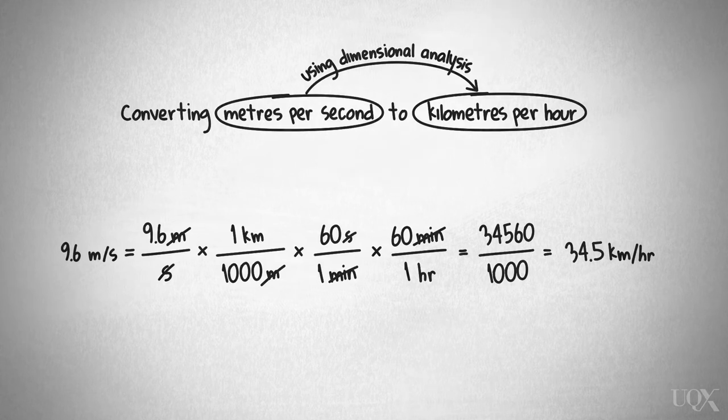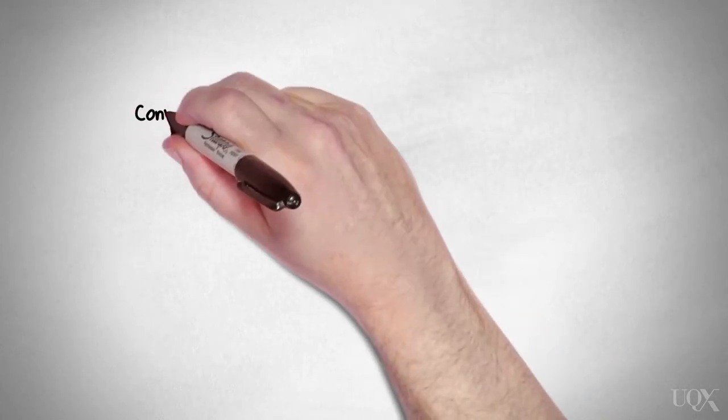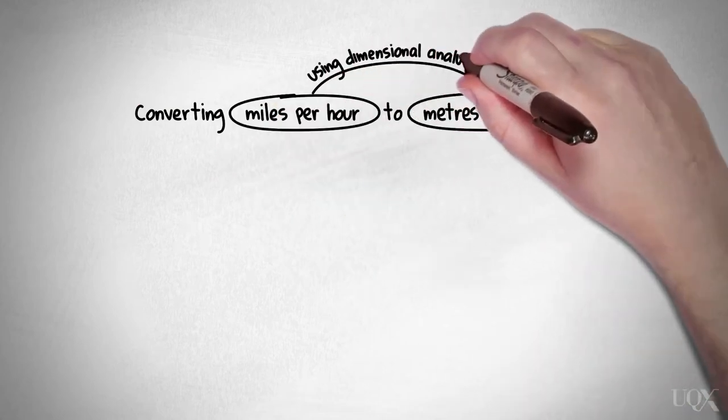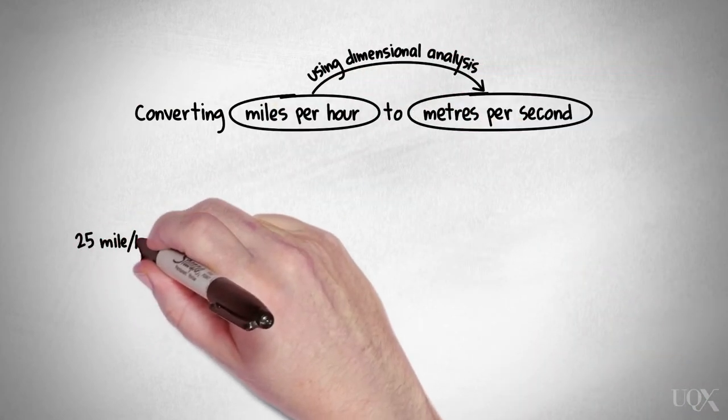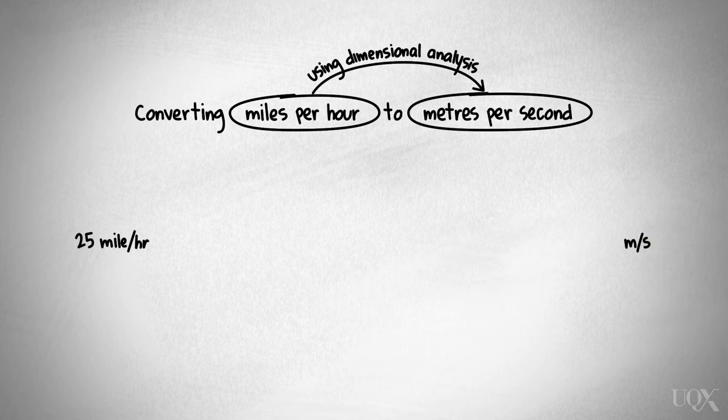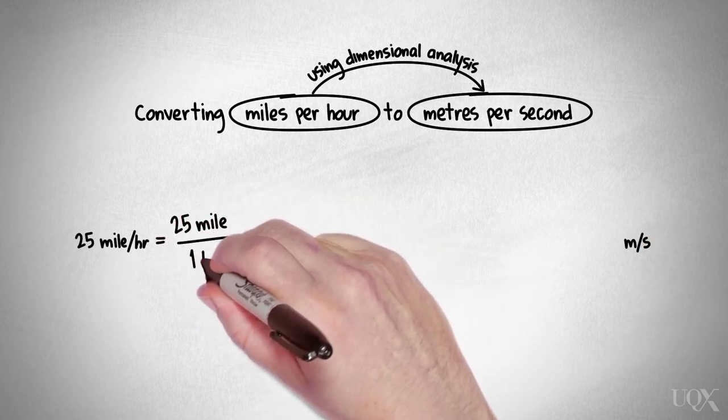Here is another example. This time, we want to convert the speed of a car travelling at miles per hour to metres per second. First, we will write the speed as a fraction.